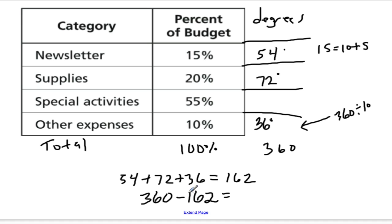360 minus 100 is 260, minus another 60 is 200, minus 2 is 198 degrees, which is the measure of special activities. So all together, if I didn't make any mistakes, these four numbers should add up to 360 degrees. Since these all add up to 360 degrees, I know I'm right.